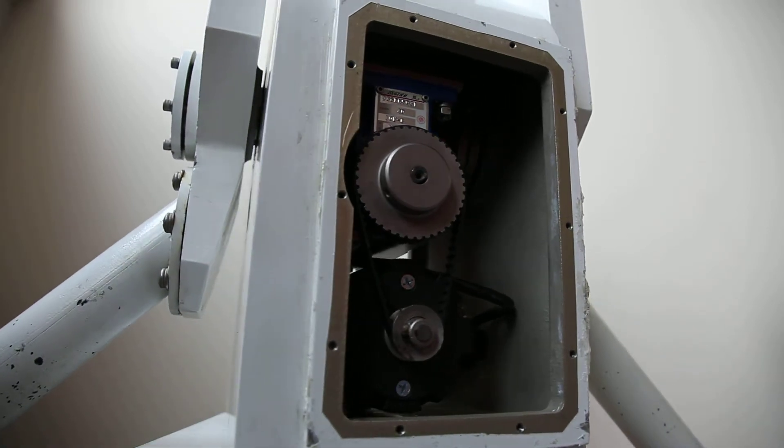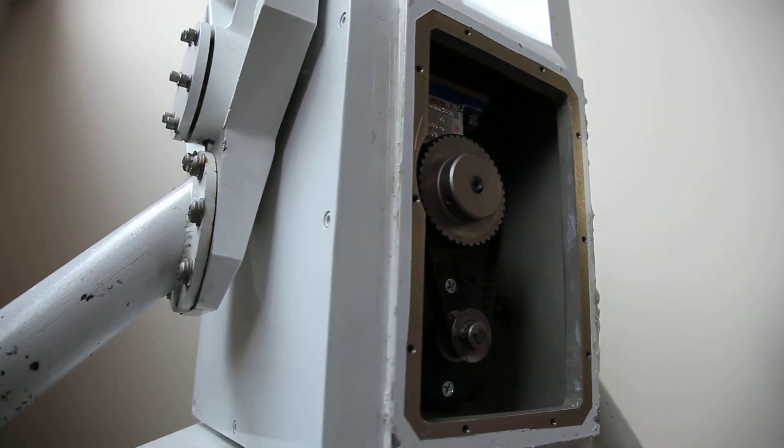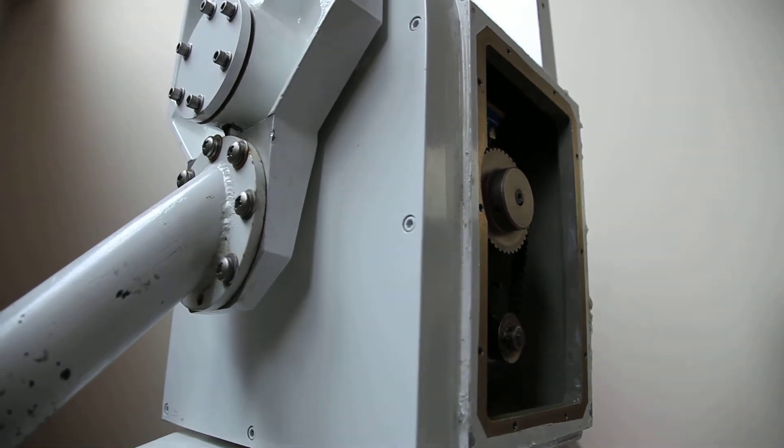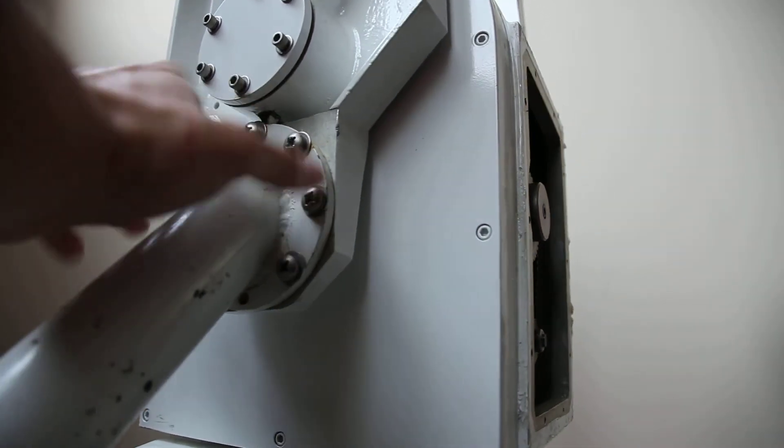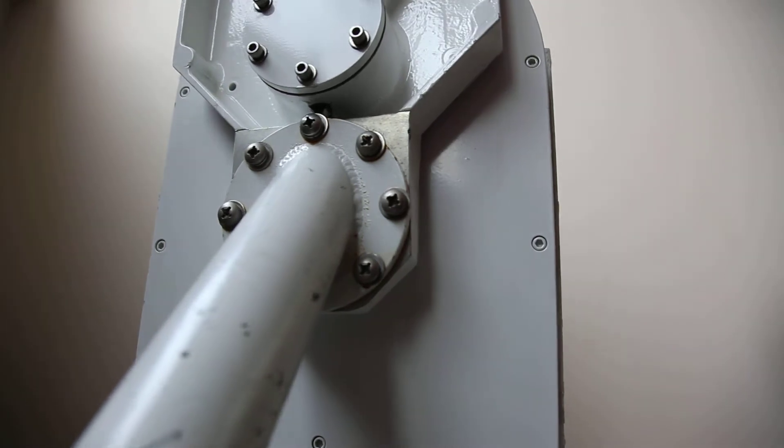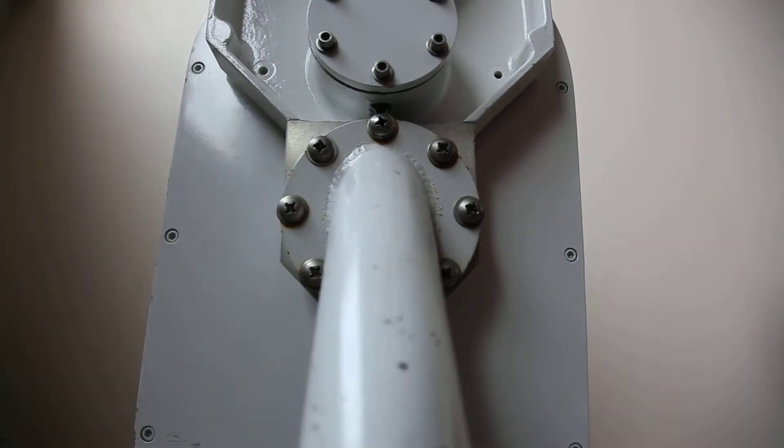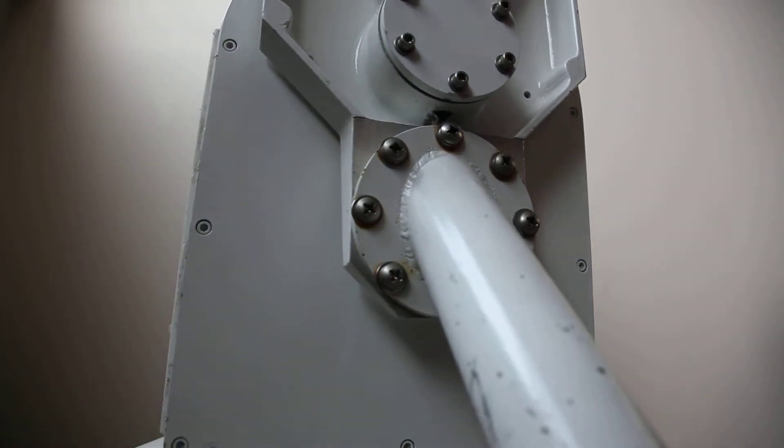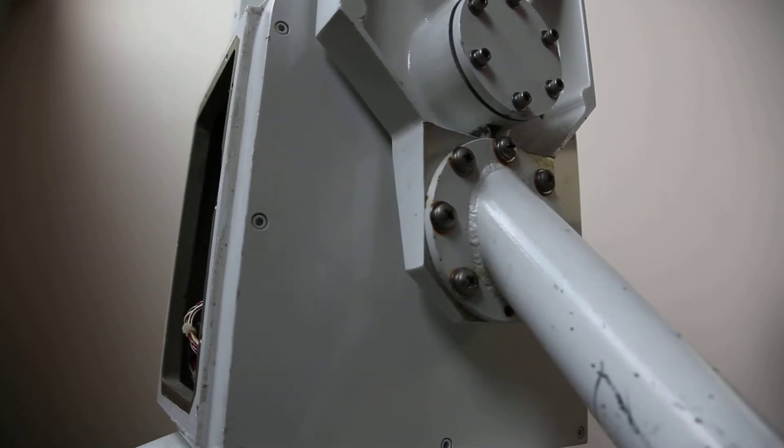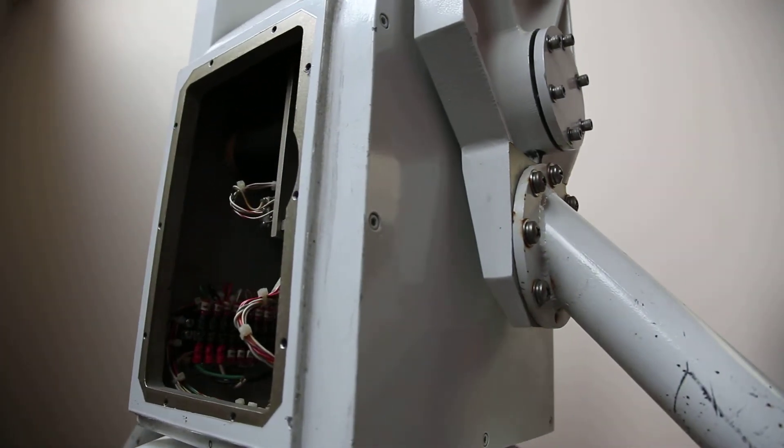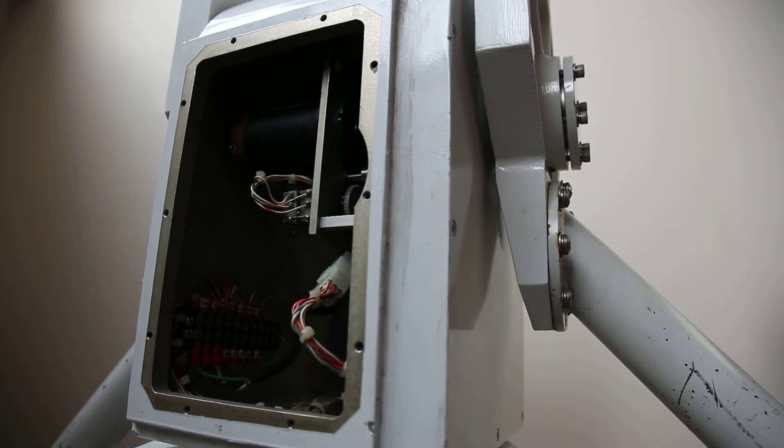What you can see on the bottom here are the counterweight arms which can be fixed at different angles. It's not a perfect 1 to 1 ratio, so you'd have to do a little bit of math to determine how much counterbalance is necessary for the antenna load on the mounting side.